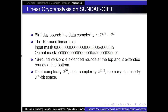We also give a linear cryptanalysis result on SongBird GIFT. SongBird GIFT also has a birthday bound, so data complexity should be less than 2^{64}. We use a 10-round linear trail with the given input and output masks to attack its 16-round version, with 4 extended rounds at the top and 2 at the bottom. Data complexity is 2^{60}, time complexity is 2^{91.2}, and memory complexity is 2^{96} bits.